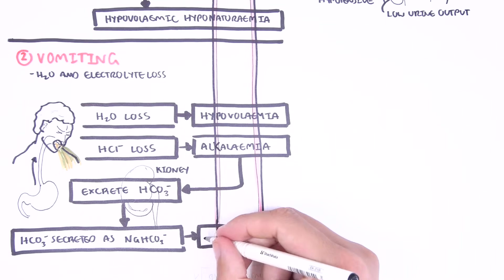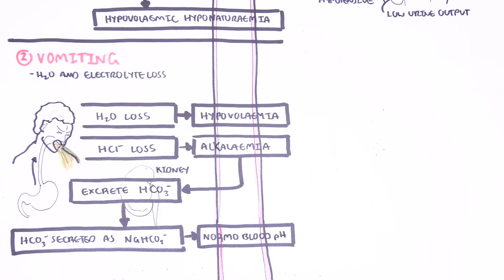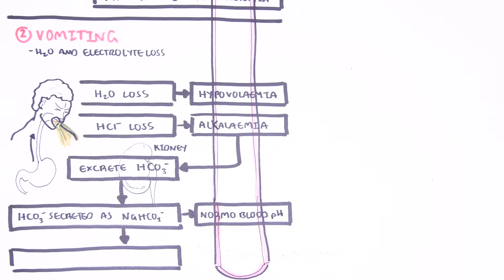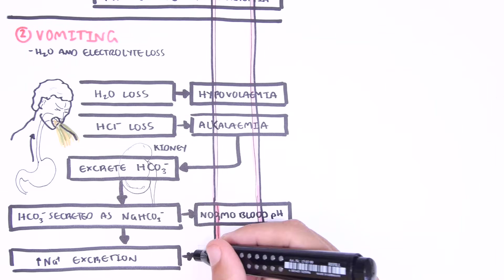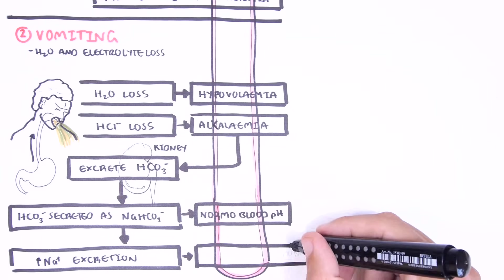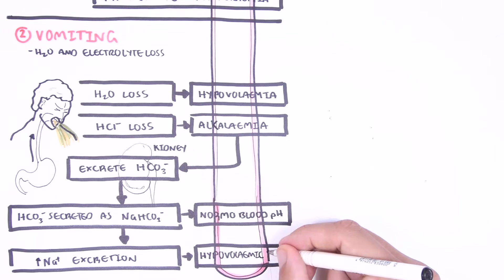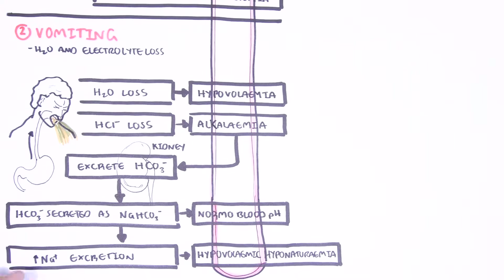Excretion of bicarbonate from the body reduces serum pH back to normal. The excretion of sodium in the kidneys together with bicarbonate, as well as the vomiting up of electrolytes, is what leads to hypovolemic hyponatremia. Diuretics and vomiting will give you an increase in urine sodium.